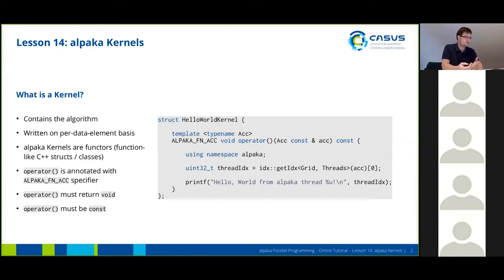An ALPAKA kernel functor always has this operator here which needs to be annotated with the ALPAKA function ag specifier in the beginning. This tells the compiler at compile time that this is going to be transformed into an actual kernel or a device function later.